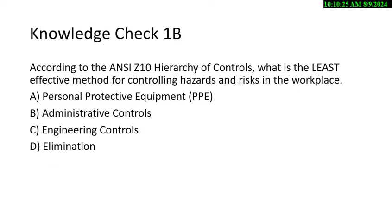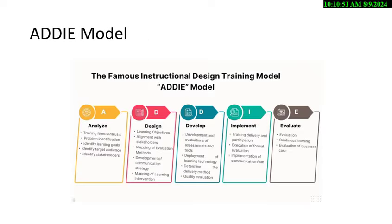What's the least effective method of controlling hazards and risks in the workplace overall? Options: PPE, administrative controls, engineering controls, or elimination. You have to know this table — PPE is the last resort. PPE is always the least effective because it's the last line of defense.